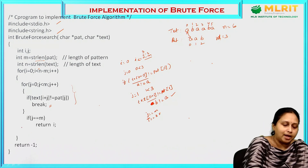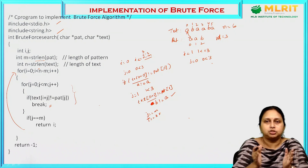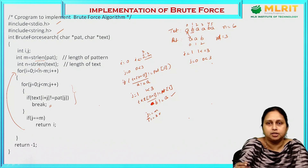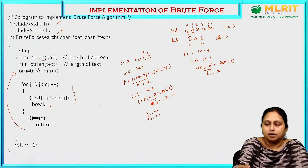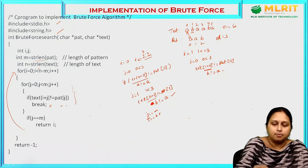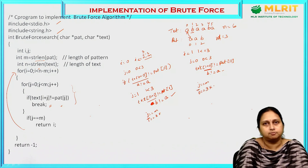For i=1, j=0: check text[1+0] not equal to pattern[0], that is 'b' not equal to 'a' — condition is true. Inner loop terminates immediately. Check j equal to m: j is 0 and m is 3 — condition fails again. i increments to 2, condition 2 less than or equal to 3 is true. j resets to 0, condition 0 less than 3 is true.